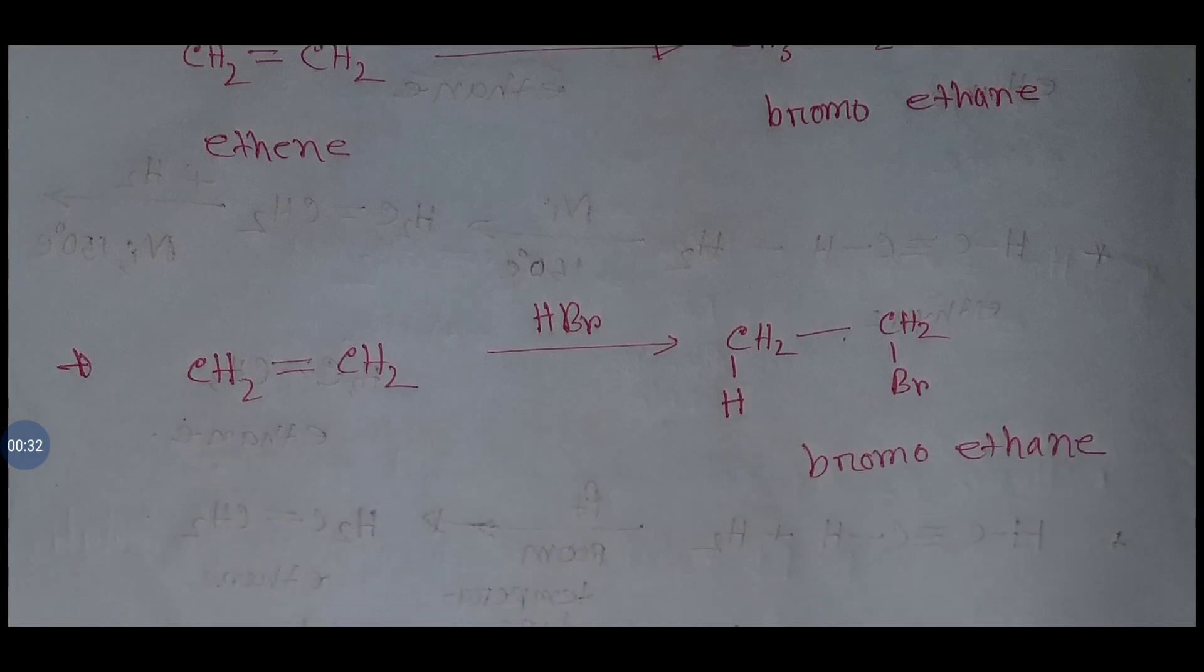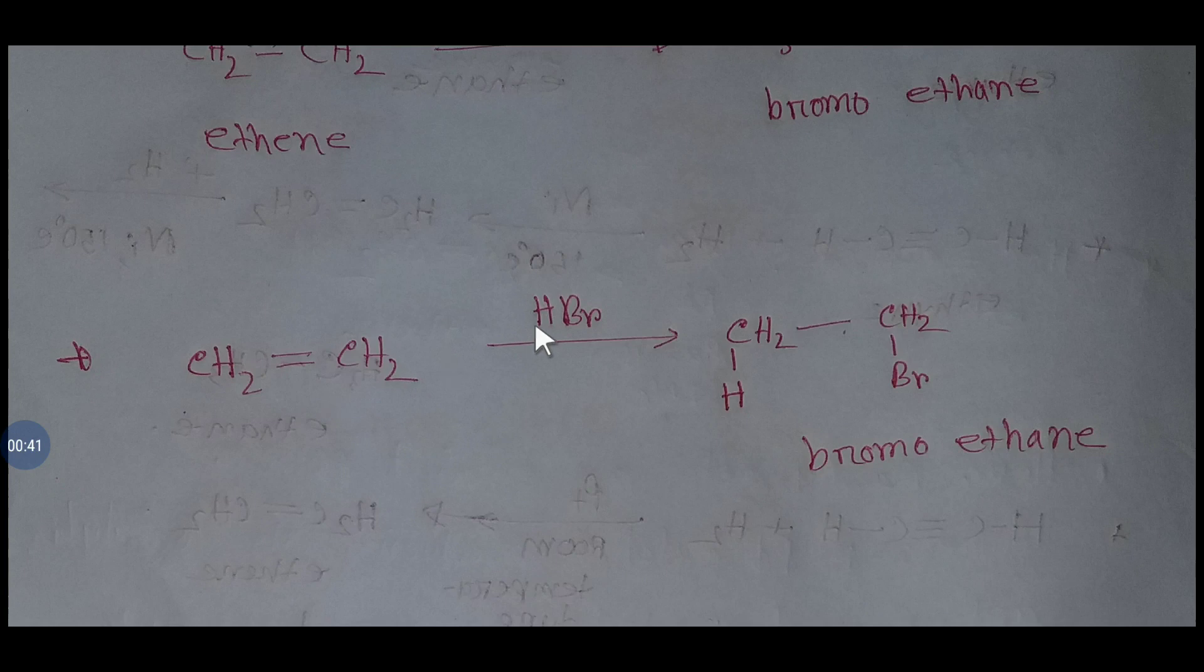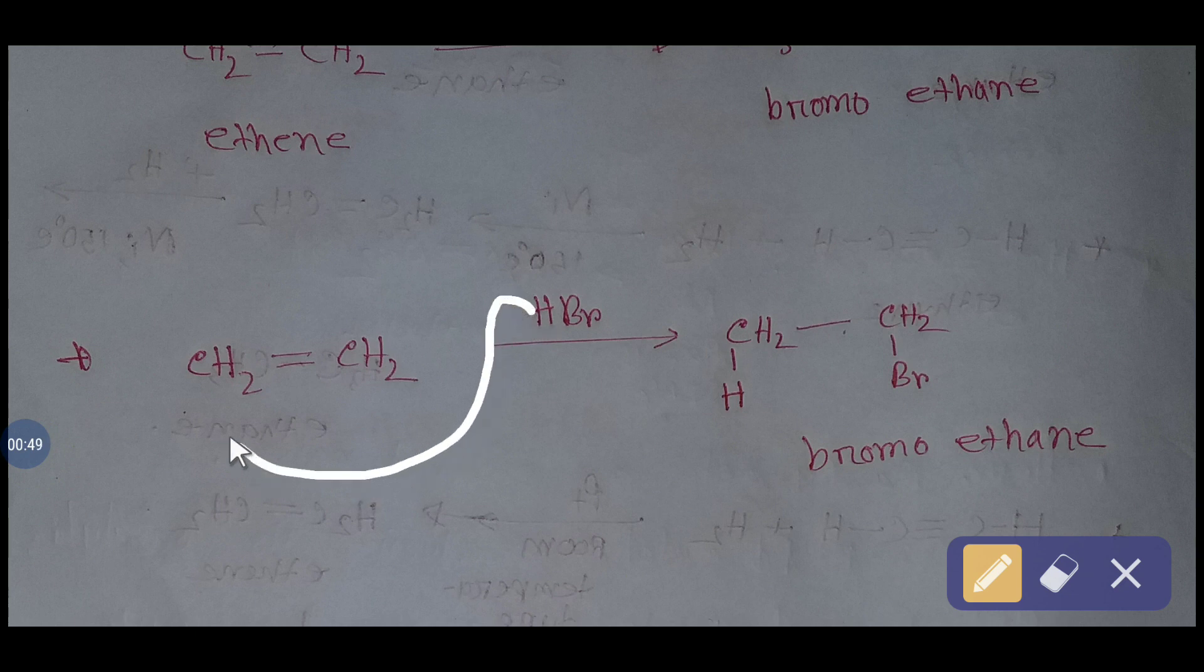This is ethene. If you apply hydrogen bromide here, then an addition reaction will happen. By this addition reaction, the hydrogen may come to any carbon and the bromine may come to any carbon, because this is a symmetric alkene.